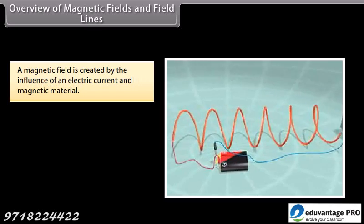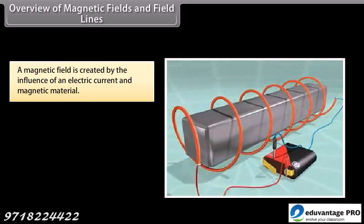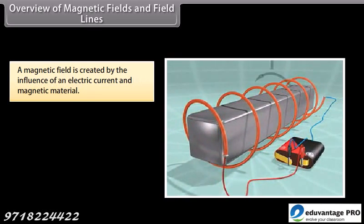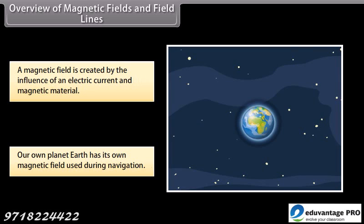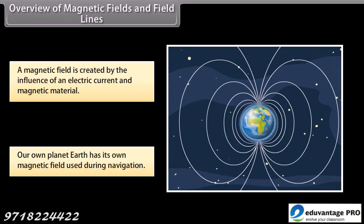Overview of magnetic fields and field lines. A magnetic field is created by the magnetic influence of an electric current and magnetic material. Our planet Earth produces its own magnetic field, which is an important factor during navigation. Magnetic fields are also used in electric devices such as transformers.